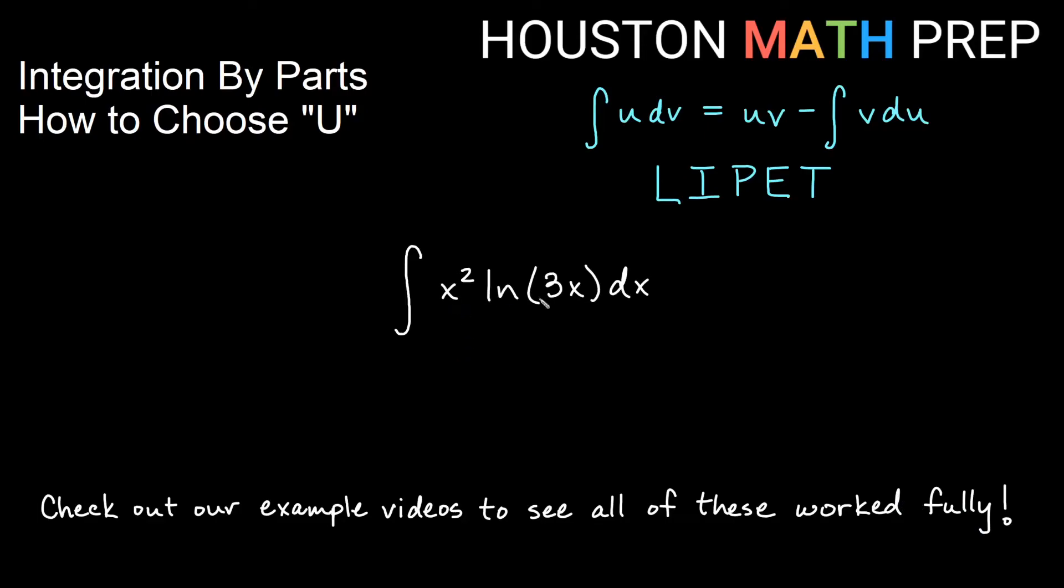Looking at the next one, x squared ln of 3x. So the x squared is again a polynomial. And our logarithm, of course, is going to be an L. So I have an L and a P. In LIPET, L comes first. So this one will be my choice for U. And then I can go ahead and say that U is going to be ln of 3x. And dv is going to be x squared dx.